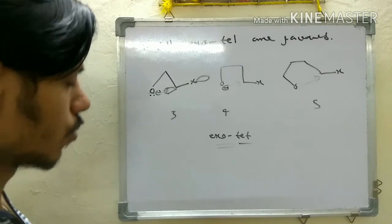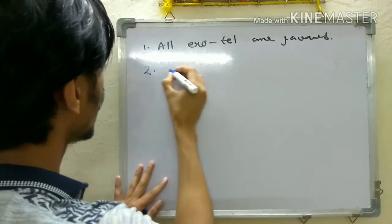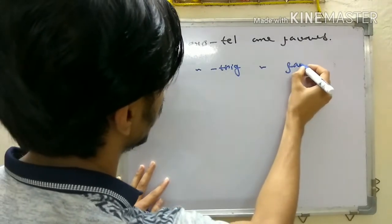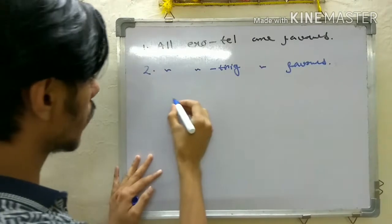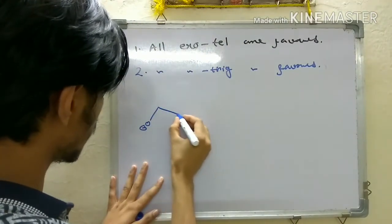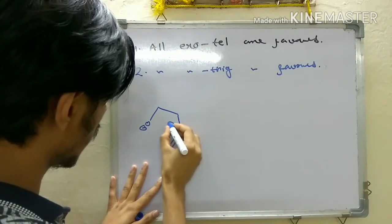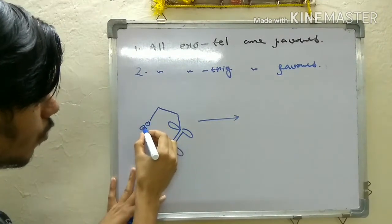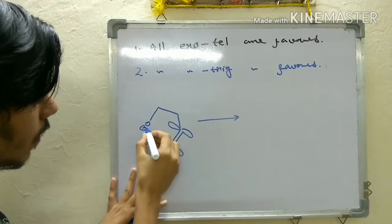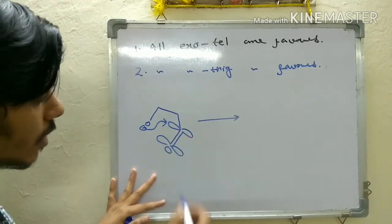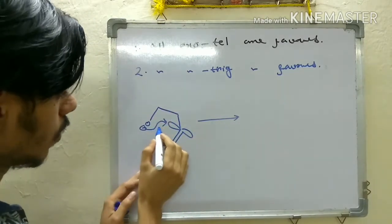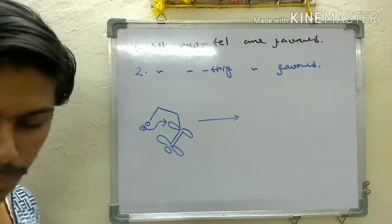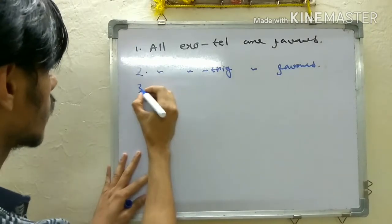The second rule is that all exo-trig reactions are also favored. In this case, the nucleophile — say an O-minus — can always approach the pi* orbital of the alkene, irrespective of the number of ring members. That's why all exo-trig reactions are also favorable.